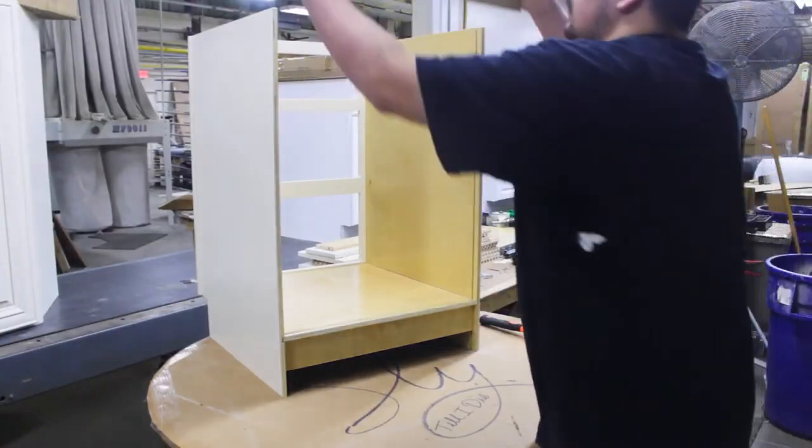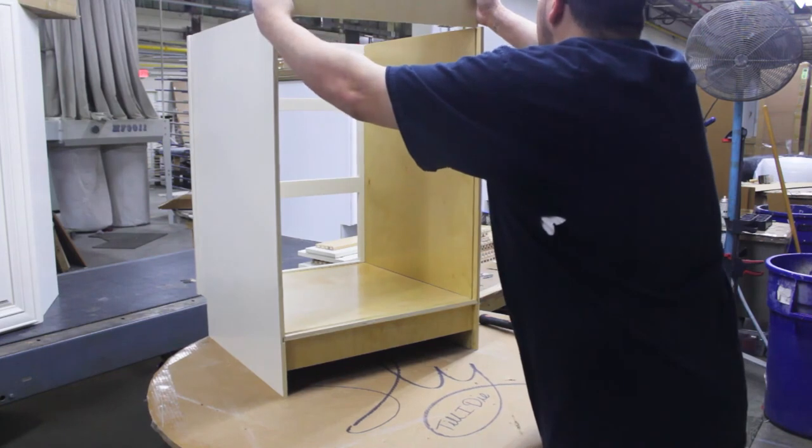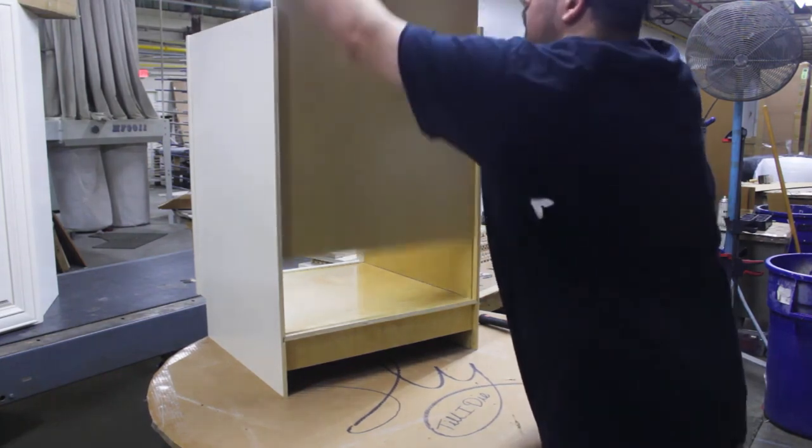Set your cabinet upright and slide the back wall into place using the grooves. Make sure it fits into the groove on the floorboard as well.